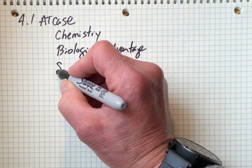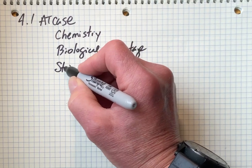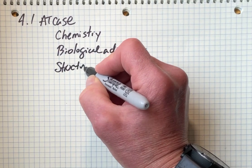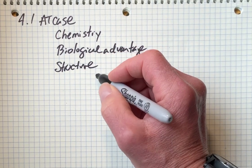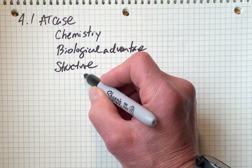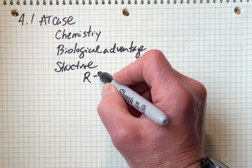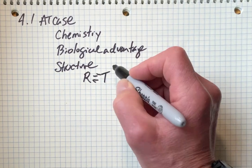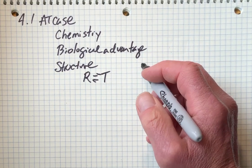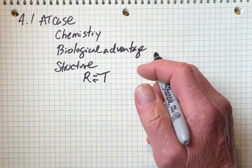You'll have an understanding of its structure, especially how that structure relates to allostery with an R to T equilibrium, very similar to what we saw with hemoglobin.